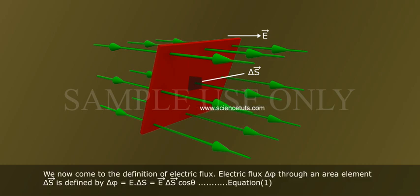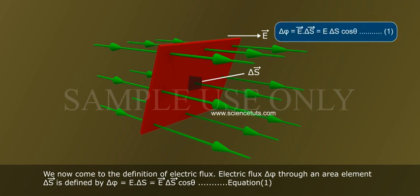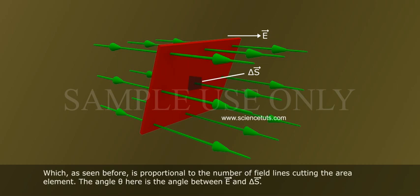We now come to the definition of Electric Flux. The electric flux delta phi through an area element delta s bar is defined by delta phi equals e bar dot delta s bar equals e delta s cos theta, equation 1, which, as seen before, is proportional to the number of field lines cutting the area element.